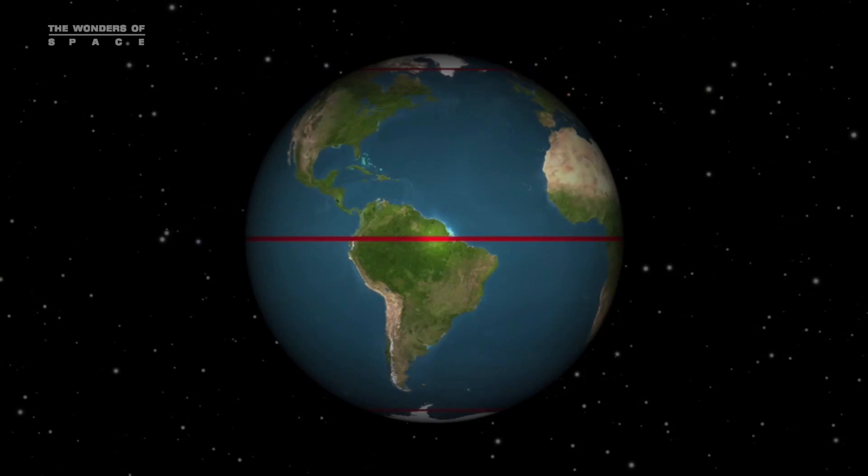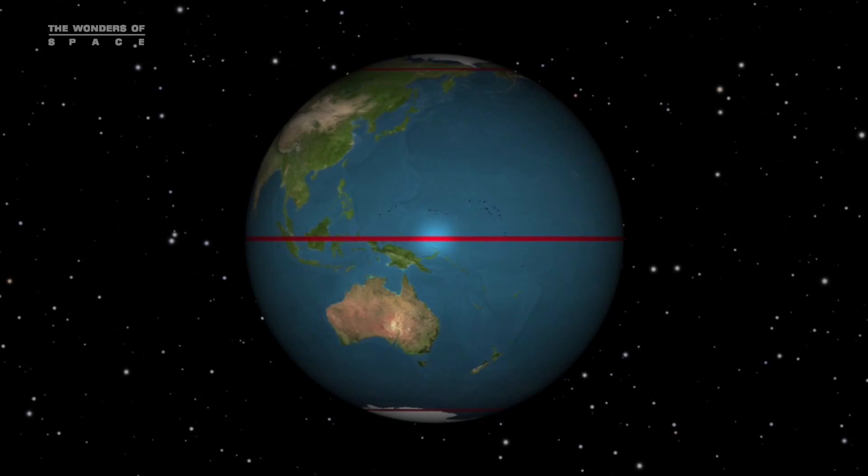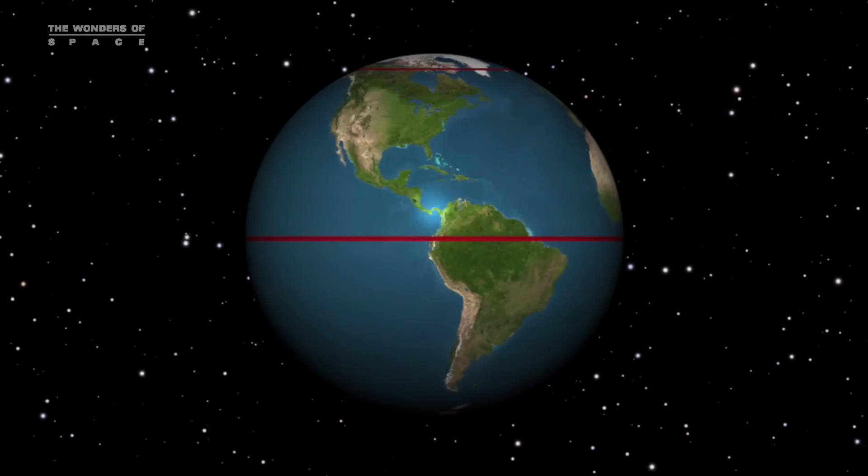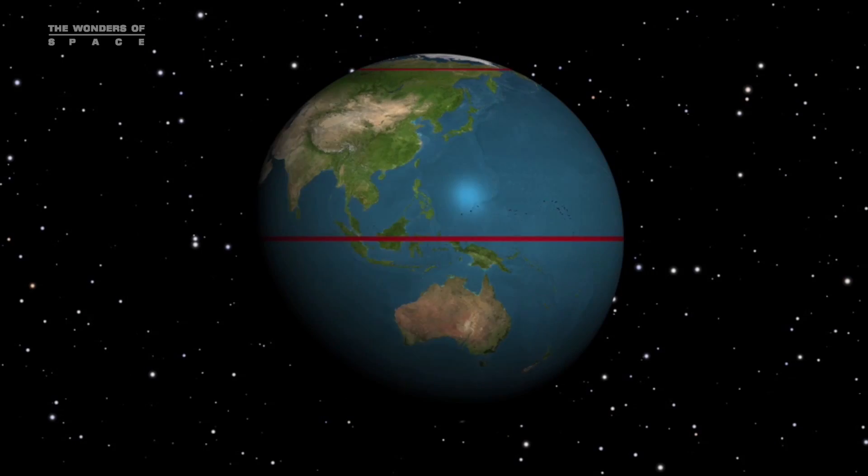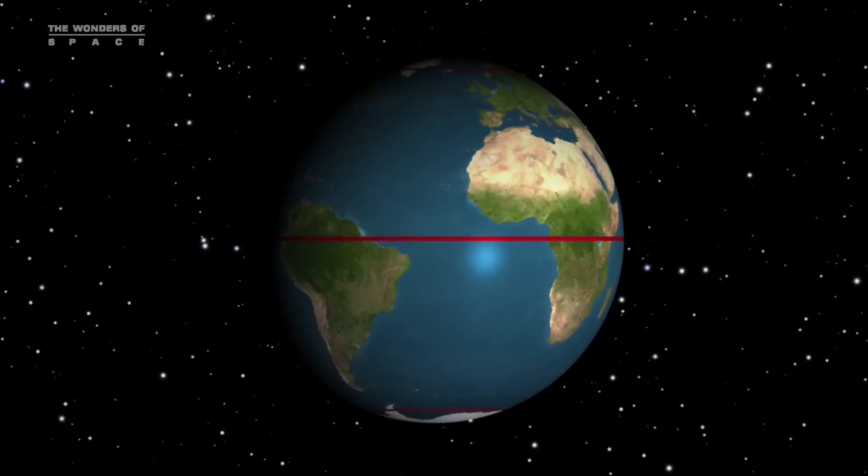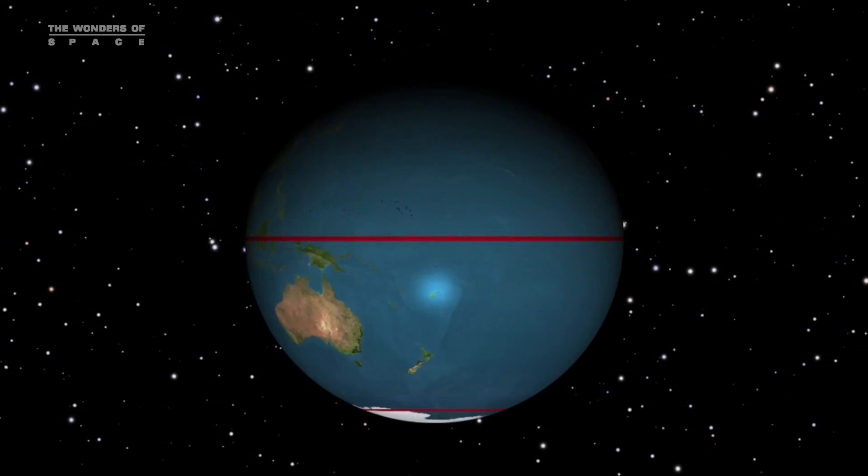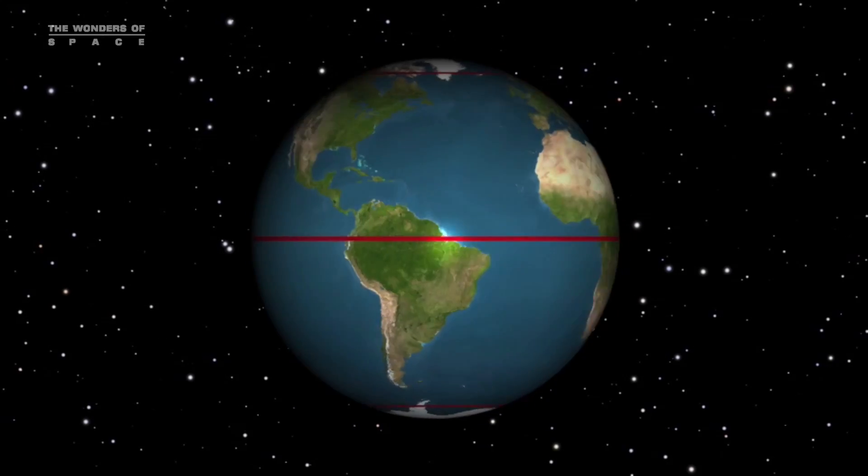At the equator, daytime and nighttime are equal to within a few minutes. But at distances north and south of the equator, the length of the day varies with the season, with the longest and shortest days being on the solstices.